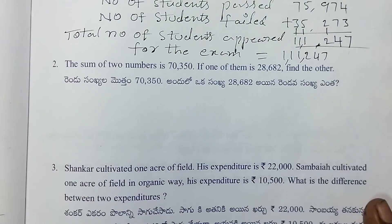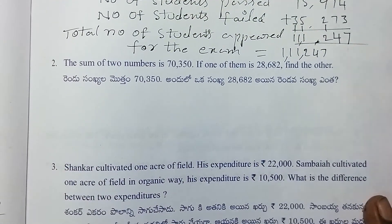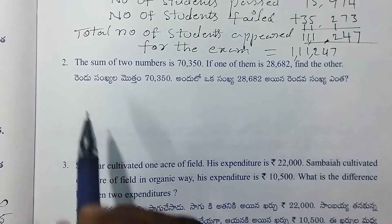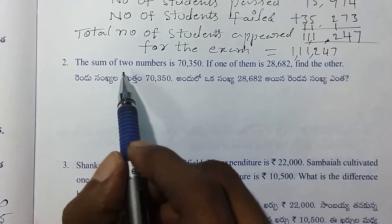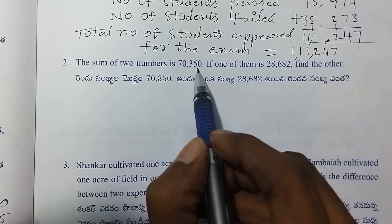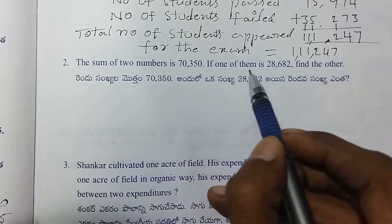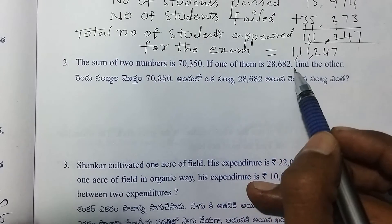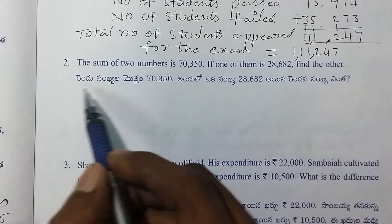The sum of two numbers is 70,350. If one of them is 28,688, find the other number.